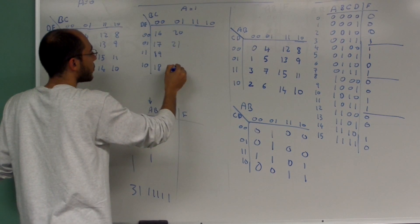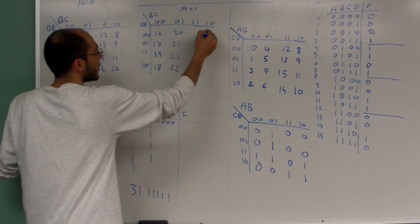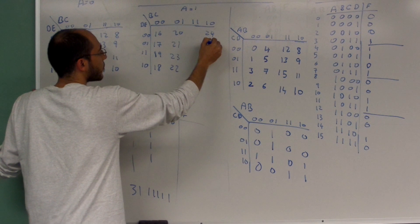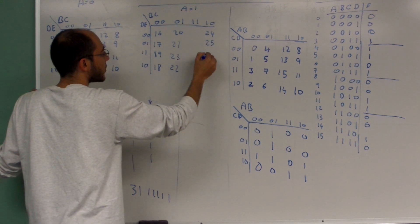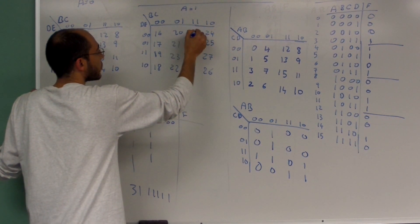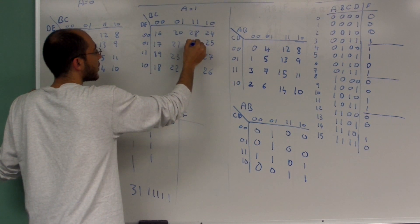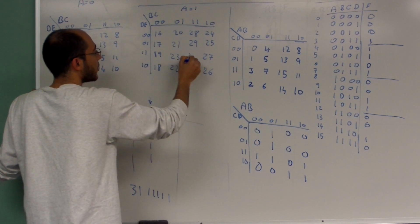The second k-map (A equals one) contains positions 21, 22, 23, 24, 25, 26, 27, 28, 29, 30 — all following the same column-wise filling pattern as the four variable k-map.